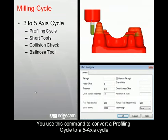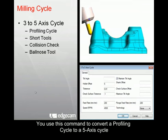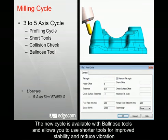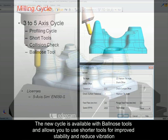You use this command to convert a profiling cycle to a 5 axis cycle. The new cycle is available with ball-nose tools and allows you to use shorter tools for improved stability and reduced vibration.